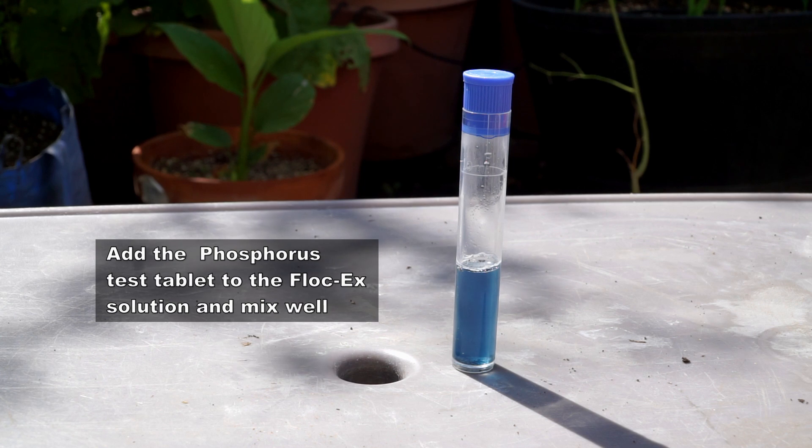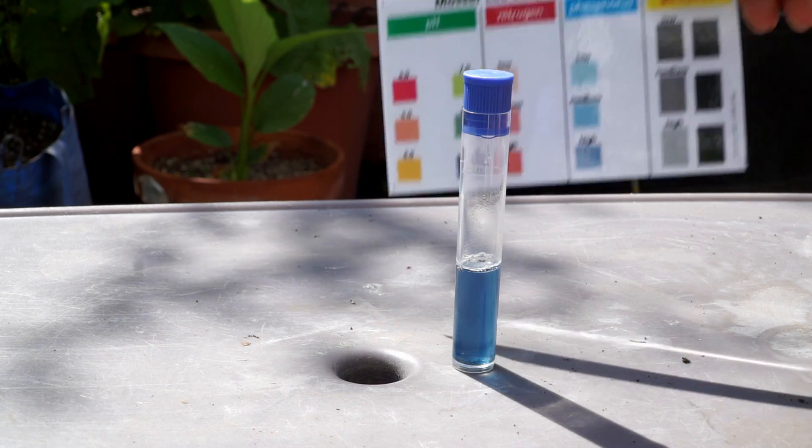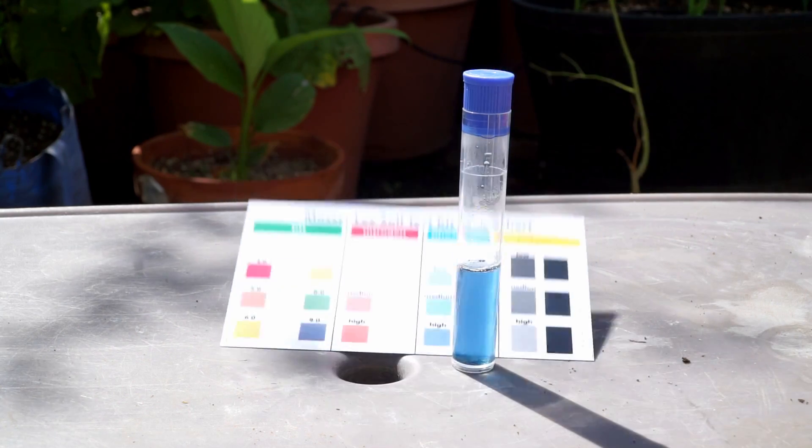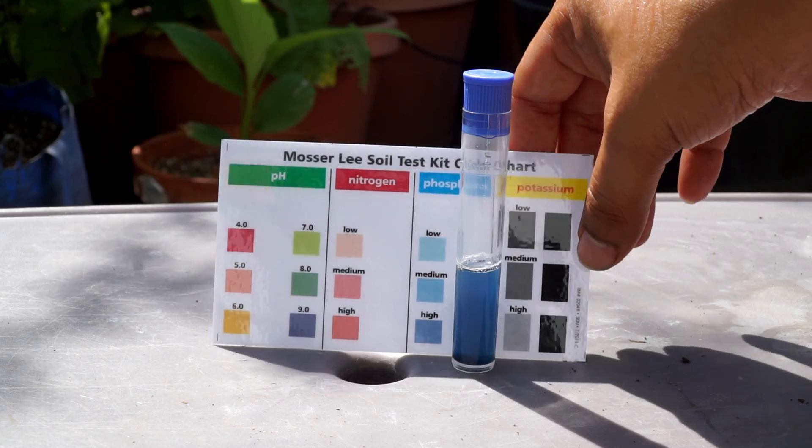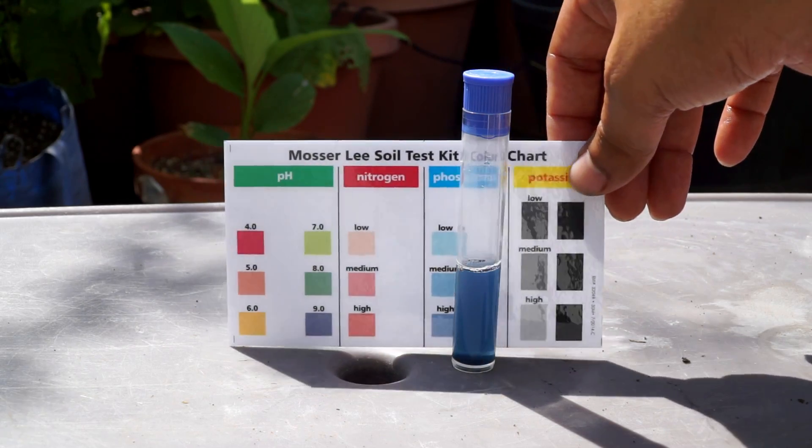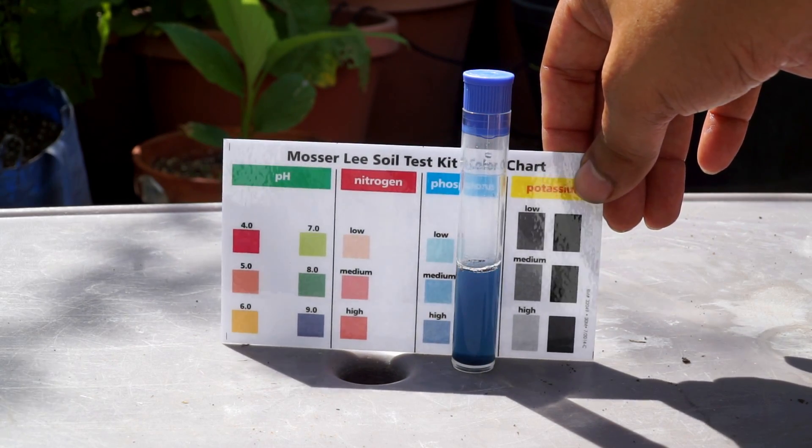The next important nutrient that plants need is phosphorus. Let's go ahead and do the phosphorus test in a similar manner.